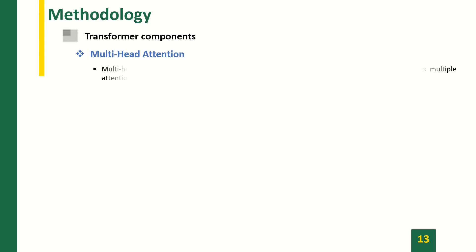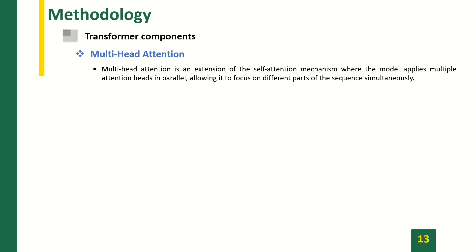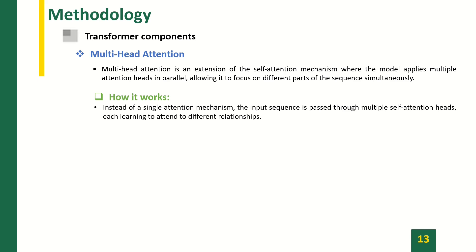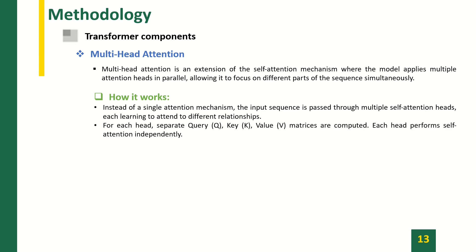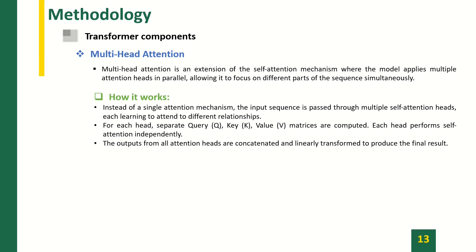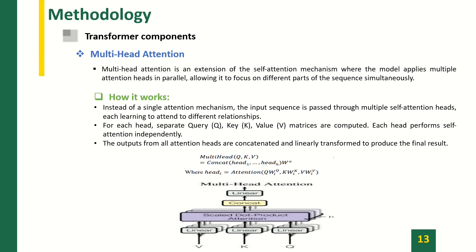Multi-head attention is an extension of the self-attention mechanism where the model applies multiple attention heads in parallel, allowing it to focus on different parts of the sequence simultaneously. Instead of a single attention mechanism, the input sequence is passed through multiple self-attention heads, each learning to attend to different relationships. For each head, the query, key, and value matrices are computed, and each head performs self-attention independently. The outputs from all attention heads are concatenated and linearly transformed to produce the final result.